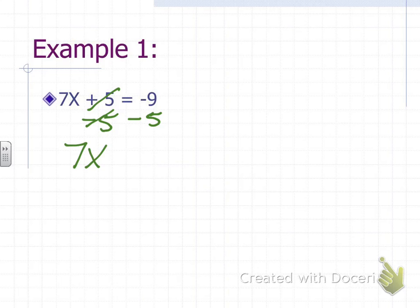And here's a little jingle I like to sing: same sign, add and keep. So they're both negatives, negative 9 and negative 5, so I'm going to add and keep the sign. So I'm going to do some additional work over here. 9 plus 5 equals 14. But remember, it was negative and negative, so we keep the sign when we write it. And so it's 7x equals negative 14.